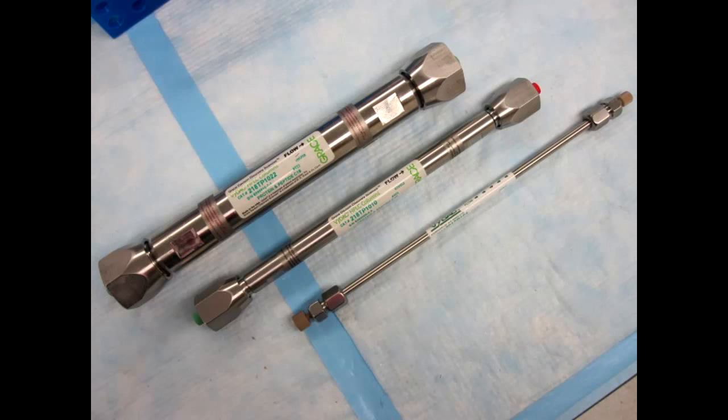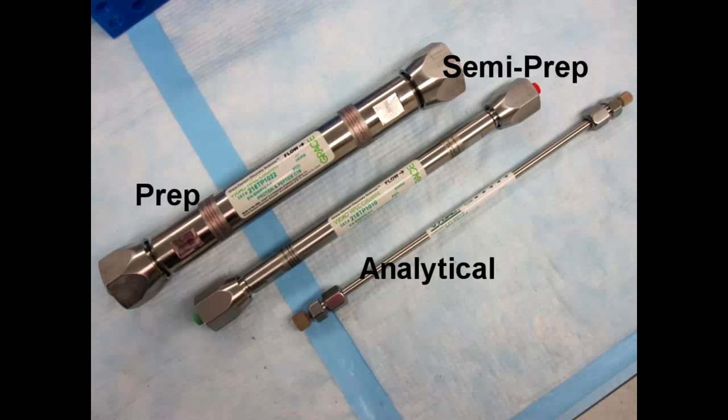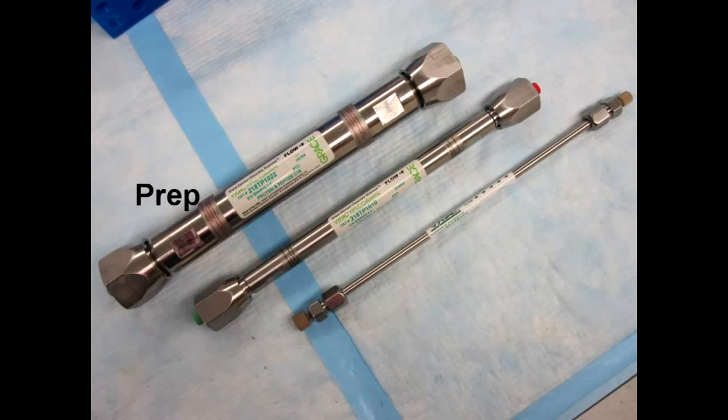The three sizes shown here are prep, semi-prep, and analytical. For the prep column, the largest column, we add 5 to 10 milligrams of peptide each run. For the semi-prep, it goes down to about 1 milligram. And lastly, for the analytical, 0.1 milligrams of peptide is the recommended amount. These amounts are based off of a 2 to 3 kilodalton peptide sample.